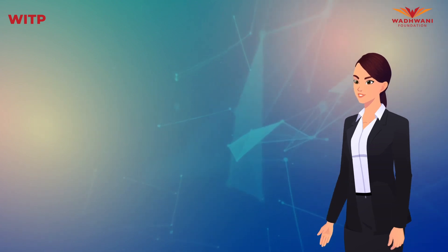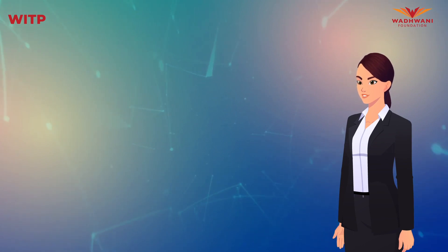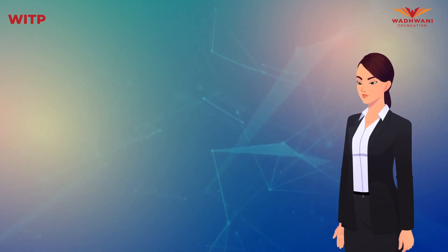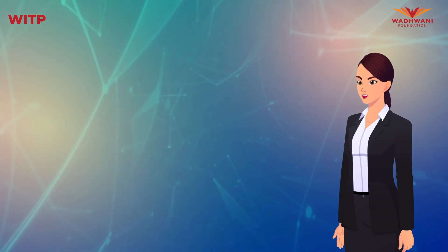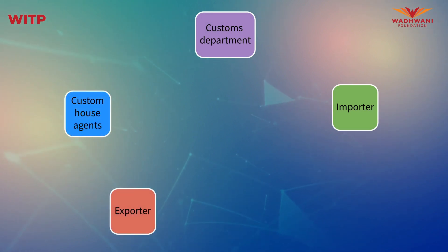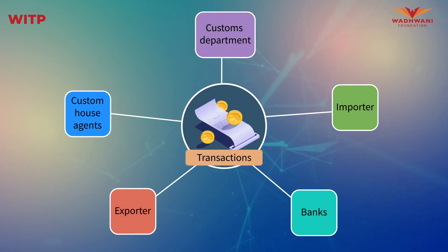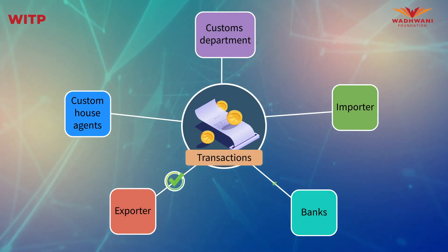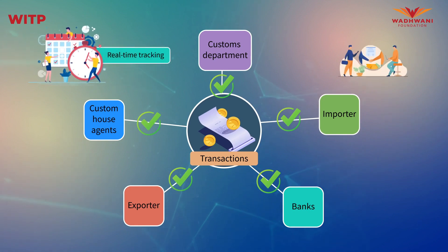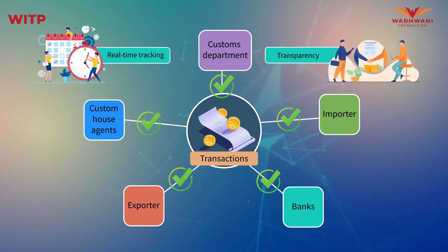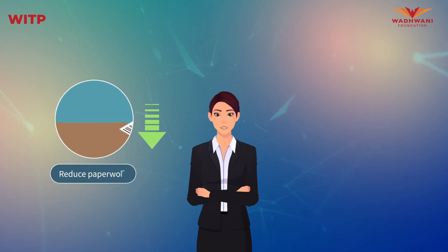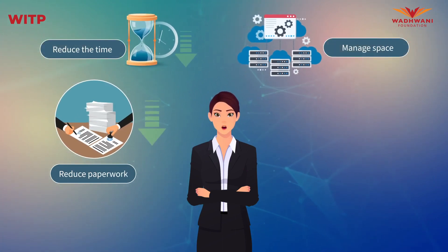Many solutions have been proposed to address the problem of lack of trust and transparency. Among the emerging technologies to solve this problem is blockchain. A blockchain-based customs duty payment processing enables all relevant parties — the customs department, the importer, the exporter, custom house agents and banks — to have access to all transactions. The transactions will be independently verified by multiple parties and cannot be changed or tampered with. This enables real-time tracking and transparency of customs clearance to all relevant stakeholders, helping the customs department reduce paperwork, reduce time required and better manage space and cash cycles.